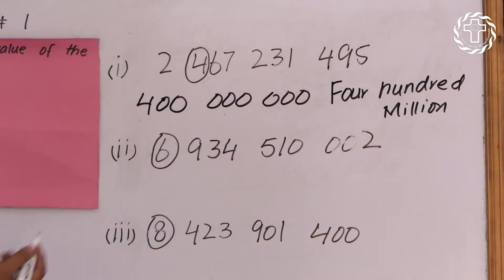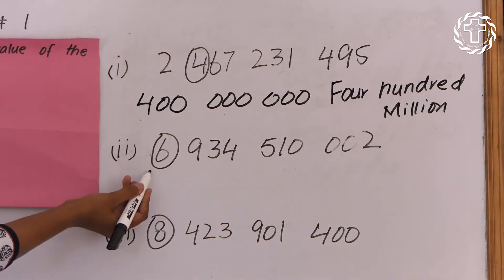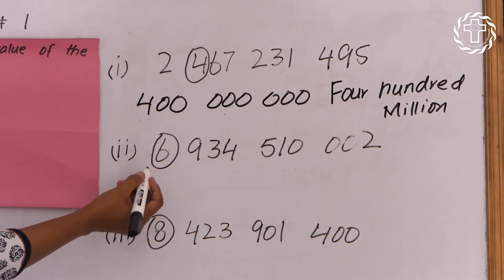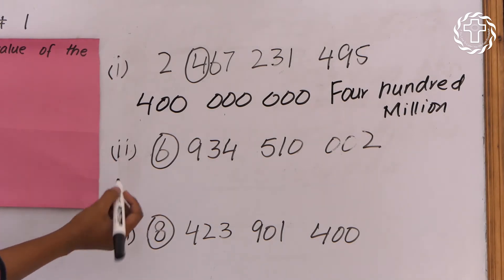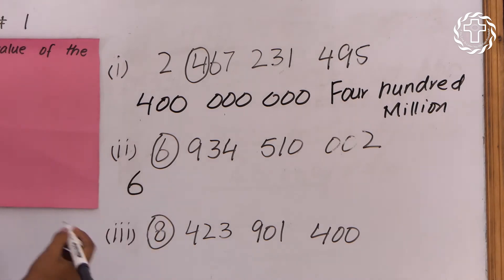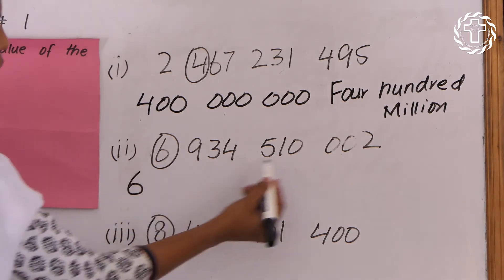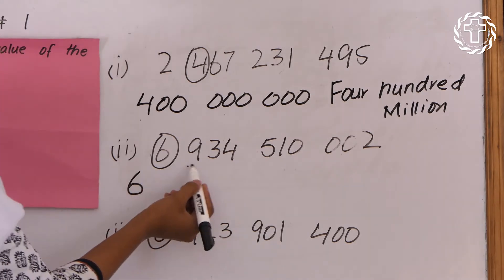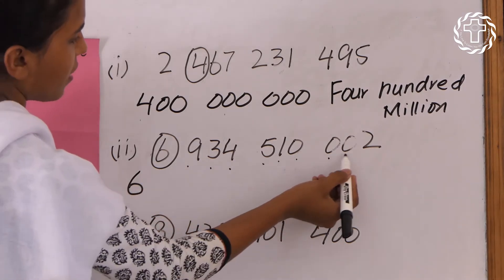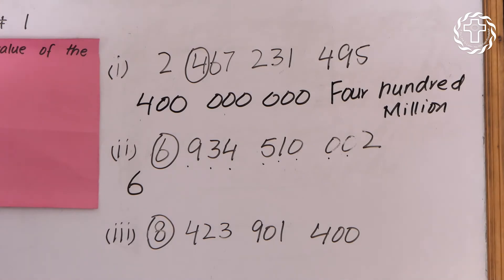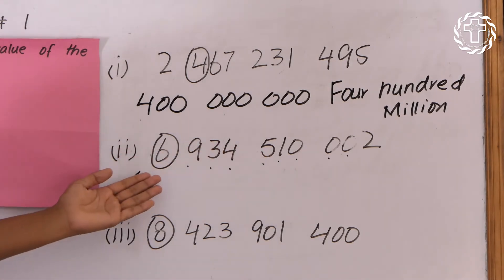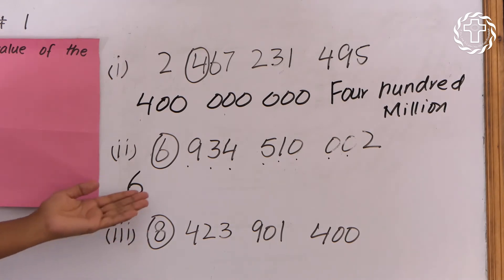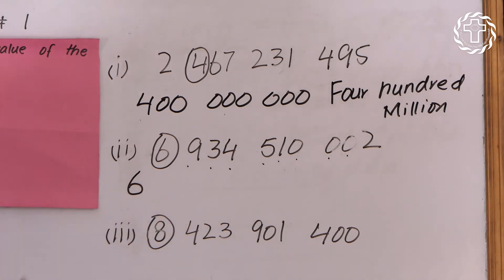The second number here — the six digit is the ringed digit. We will put six as it is, then we will count the digits on the right side. One, two, three, four, five, six, seven, eight, nine — we have nine digits on the right side of the ringed digit. So we will put nine zeros on the right side of the six digit.